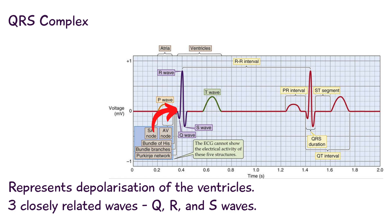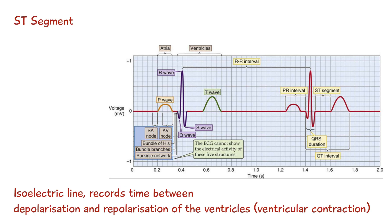We have the T-wave. The ST-segment starts at the end of the S-wave and ends at the beginning of the T-wave. The ST-segment is an isoelectric line that represents the time which occurs between depolarisation and repolarisation of the ventricles — basically, this means ventricular contraction.